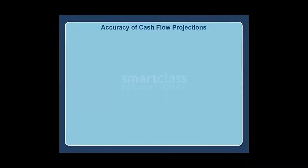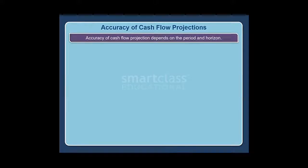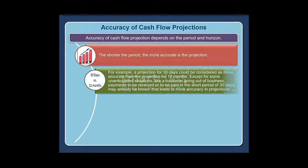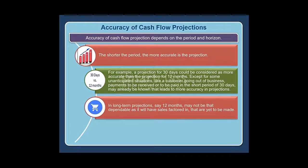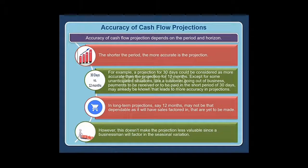Accuracy of cash flow projection depends on the period and horizon. The shorter the period, the more accurate the projection. For example, a projection for 30 days is more accurate than one for 12 months, since payments to be received or made in the short period of 30 days may already be known. Long-term projections of 12 months may not be as dependable as they will have sales factored in that are yet to be made. However, this doesn't make the projection less valuable, since a businessman will factor in seasonal variation.